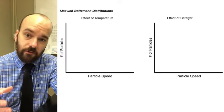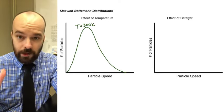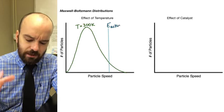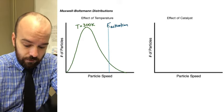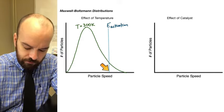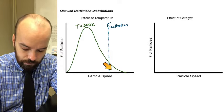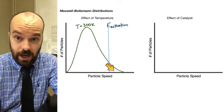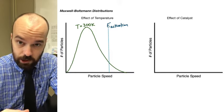How does temperature affect the rate of a reaction? Here we have a Maxwell-Boltzmann distribution at 300 Kelvin. There's going to be a certain activation energy which we can represent with a vertical line on our graph. Any particles that are moving faster than this vertical line — particles that are in the area just to the right of that — will have sufficient speed and therefore sufficient kinetic energy that whenever they collide they result in a reaction.